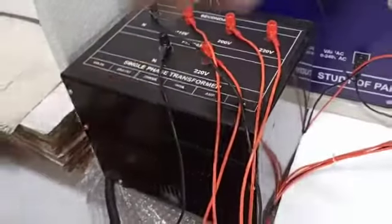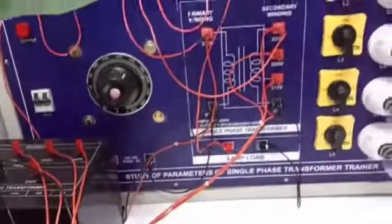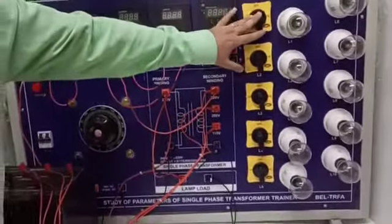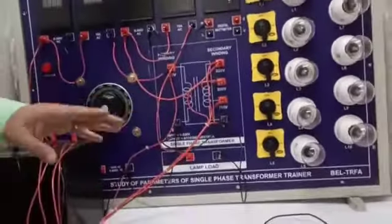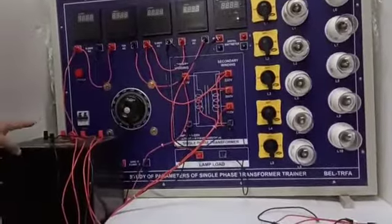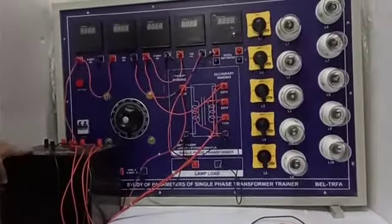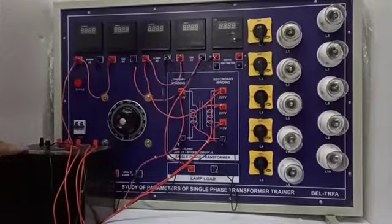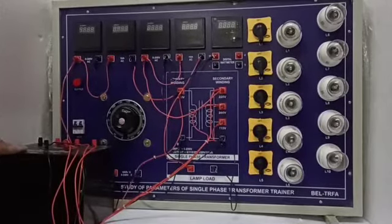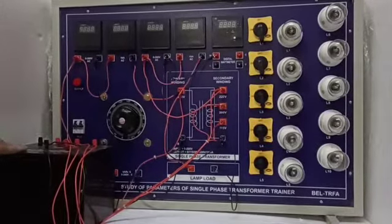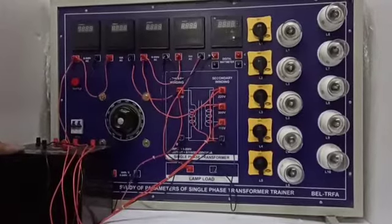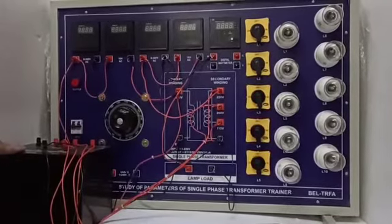Now let us go to the panel. In the panel there is inbuilt load. This load is 1 kVA that is the maximum capacity that this transformer can hold. The rating of this transformer is primary volt input 220 volt, output 0, 115, 200 volt, 220 volt and power is 1 kVA.